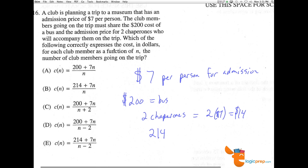Which of the following correctly expresses the cost in dollars for each club member as a function of n, the number of club members going on the trip? So n equals the club members.